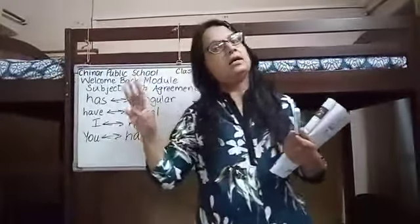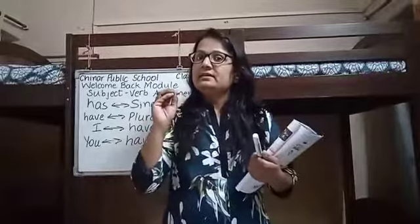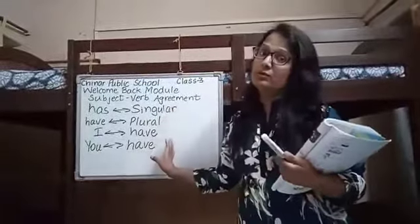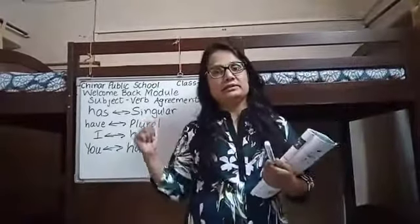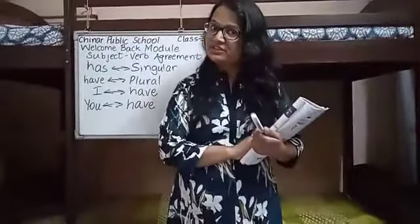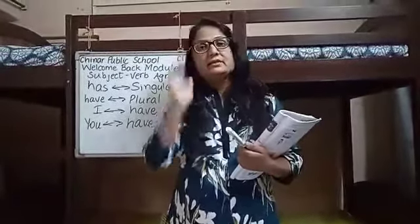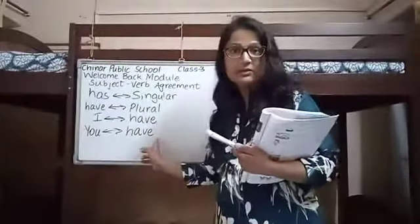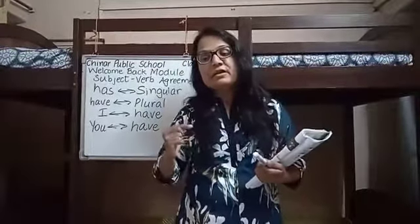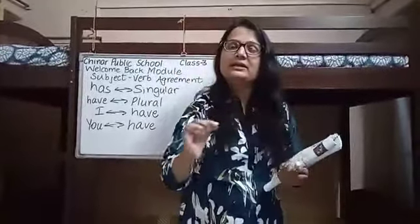So children, 'is', 'am', 'are', 'was', 'were', 'has', 'have' — these eight words basically follow a few golden rules which I discussed with you in this video. We definitely have to keep these golden rules in mind. We need to memorize and remember them very clearly, so that whenever we are solving a particular exercise, we can apply the logic and write down the correct answer.